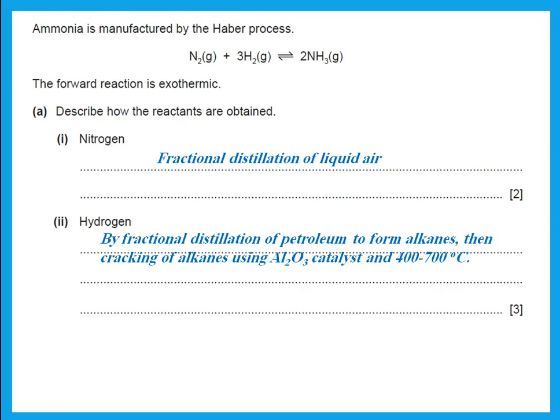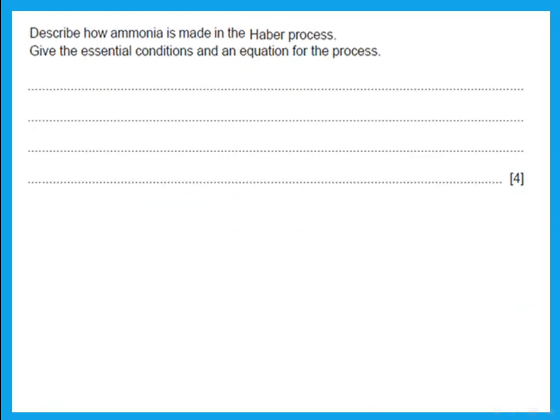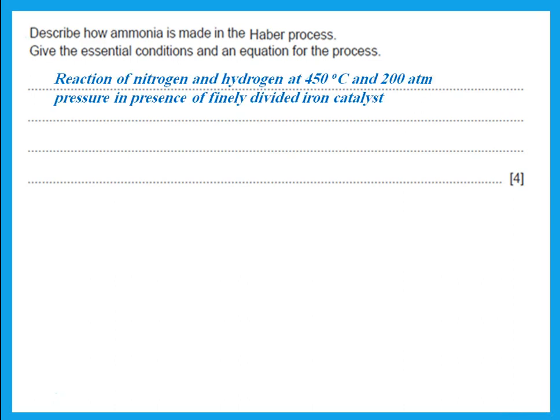The other method mentioned in the previous question is also possible. Describe how ammonia is made in the Haber process — give the essential conditions and an equation. We make ammonia by reaction of nitrogen and hydrogen to give ammonia. The conditions are: 450 degrees centigrade, 280 atmospheres pressure, and divided iron as a catalyst.